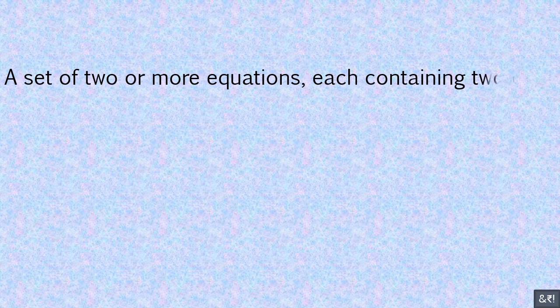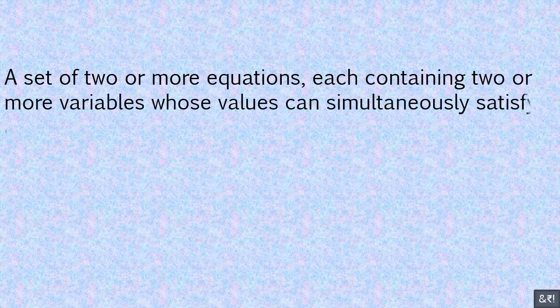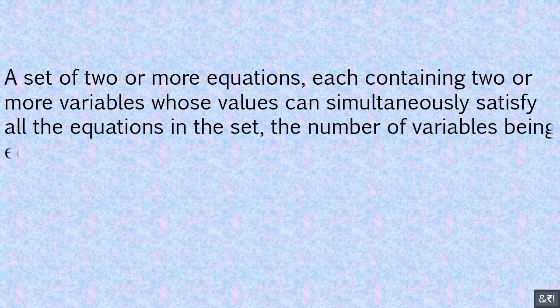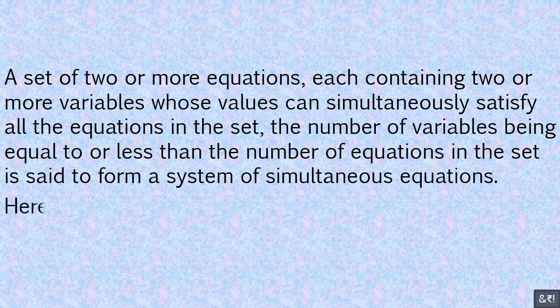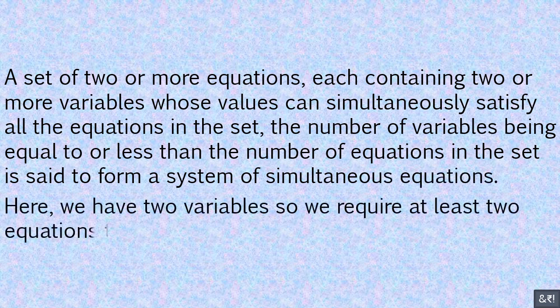A set of two or more equations, each containing two or more variables whose values can simultaneously satisfy all the equations in the set — the number of variables being equal to or less than the number of equations in the set — is said to form a system of simultaneous equations. Here, we have two variables, so we require at least two equations to form the system of simultaneous equations.